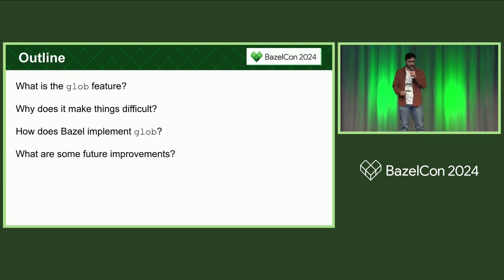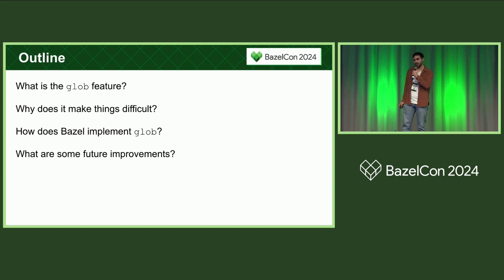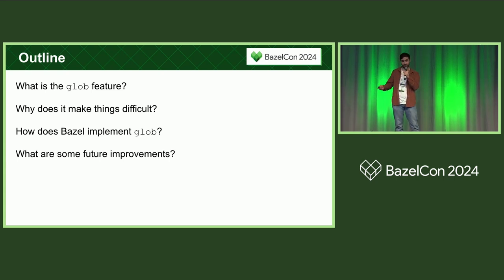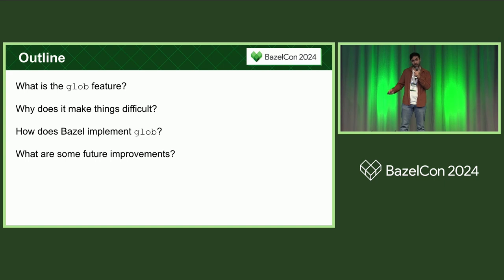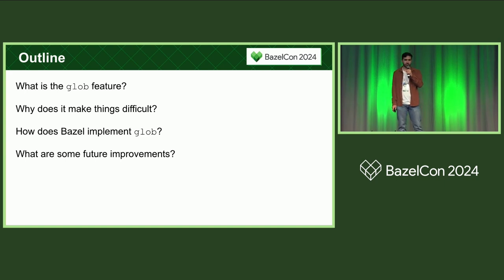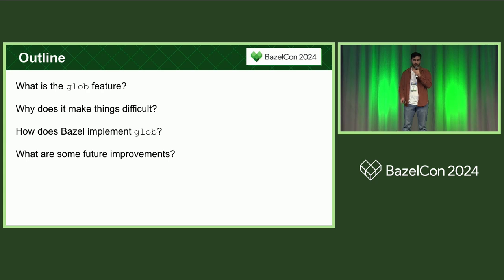In this talk, we're going to go over the glob feature in Bazel. We're going to motivate why it makes Bazel tricky to implement. And we're going to talk about how it implements glob and some different ways we've approached this problem over the years. And then finally, some future improvements.